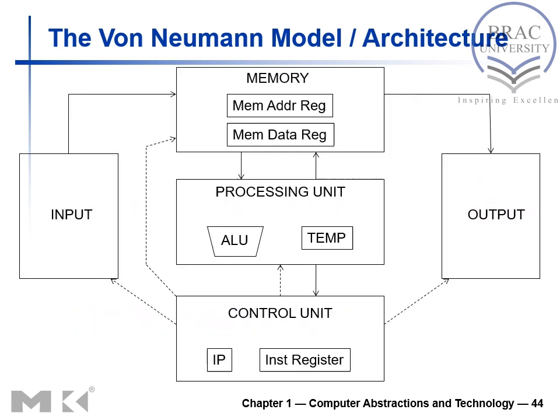Looking at the diagram of Von Neumann architecture: there is a single memory unit containing a memory address register and data register, storing both instructions and data. The same bus is used for accessing both data and instructions, and the system includes a control unit and input/output components.